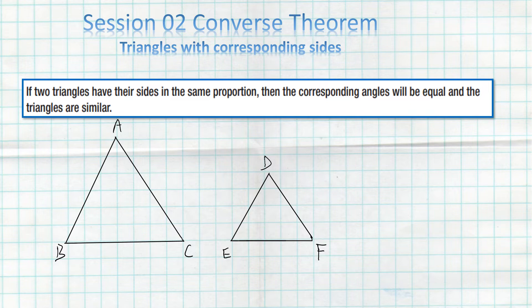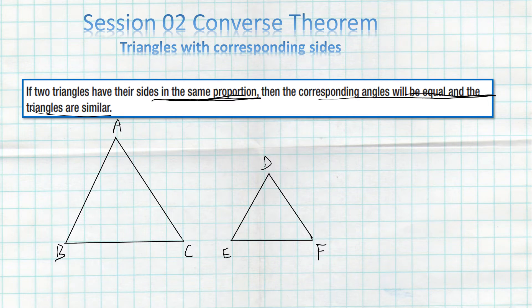When we say this is a converse theorem, we are saying the statement starts from the end — from what we had to prove in the previous theorem — and goes back to the given information. So the theorem states: if two triangles have their sides in the same proportion, then their corresponding angles will be equal and the triangles will be similar.